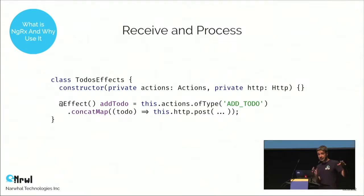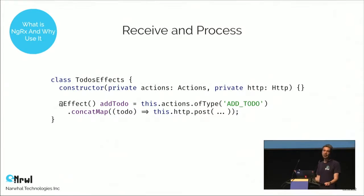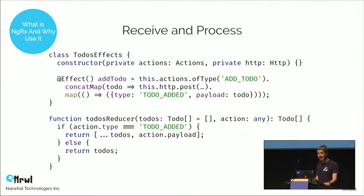The other way actions can be processed is by effects classes. The effects class takes the actions object, which is essentially an observable of all actions flowing through your application. Everything that happens of value will go through that observable. The effects class taps into it, takes a subset, and executes the necessary side effects. In reality, many interactions require both an effects class and a reducer.